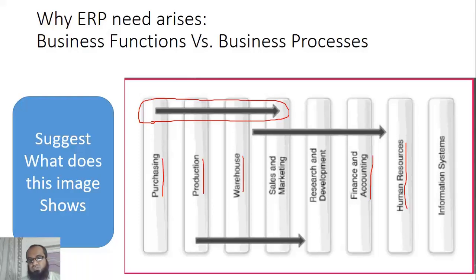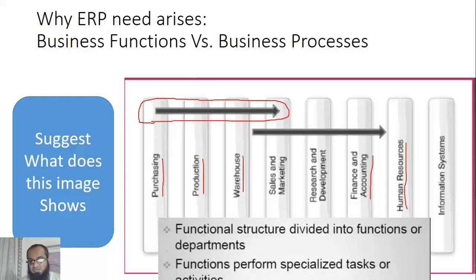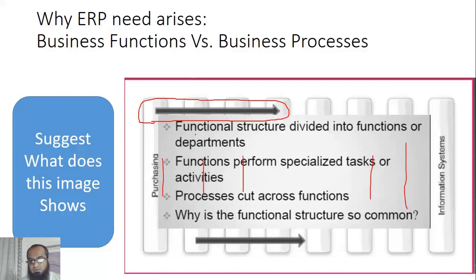ERP is actually process-focused. Why focus on processes? Because every organization is a combination of various processes, and processes exist to meet the goals of an organization. Since organizations have goals achieved by different processes, and processes require different departments, rather than having applications for every department we should have one application that caters to all processes. This is the idea of an ERP — it caters for processes that cut across various functions and departments.